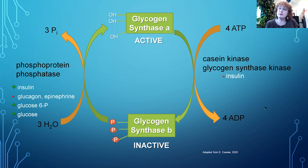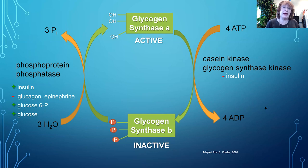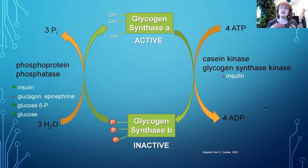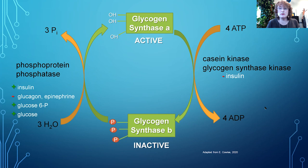This is turned off in the presence of insulin, which makes sense because if insulin is present, the body should be making glycogen — insulin indicates there's a lot of glucose around. To turn glycogen synthase back on, you use an enzyme called phosphoprotein phosphatase. A phosphatase removes phosphate groups using hydrolysis — breaking off the phosphates using water. This phosphatase is increased by insulin as well as glucose, which makes sense because you want to store glucose in the form of glycogen. However, it's turned off by glucagon and epinephrine.